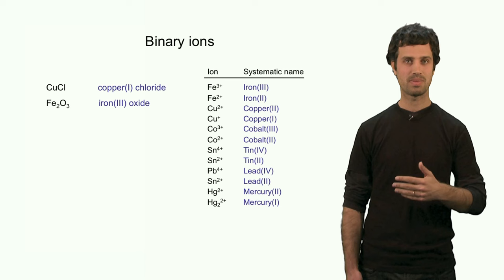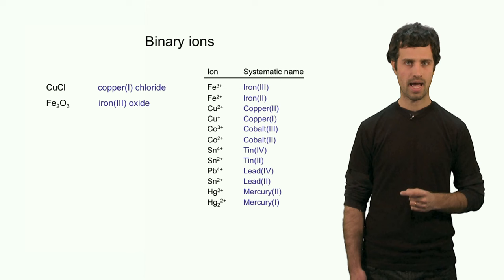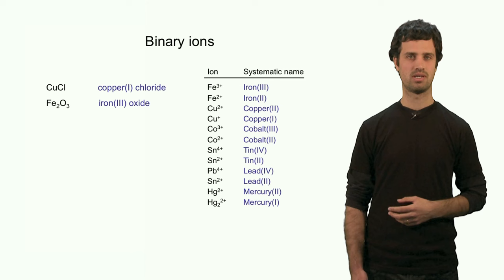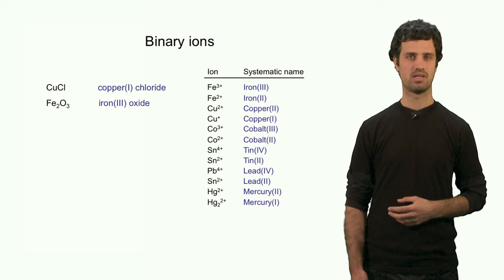That means 3 times minus 2 is minus 6. To compensate for the minus 6 I need 6 plus charges. I can do that by having 2 cations that are 3 plus, having a total of 6 plus charge. That means I have 2 Fe³⁺ iron cations. Iron(III) oxide.